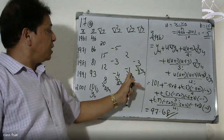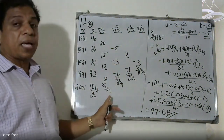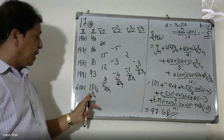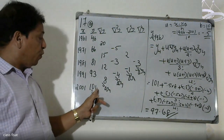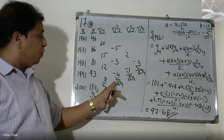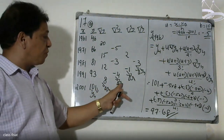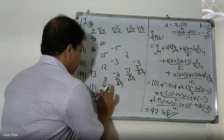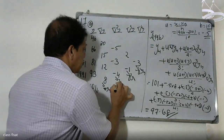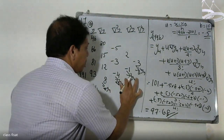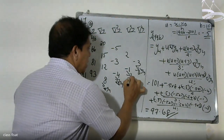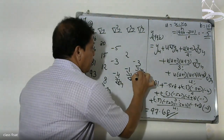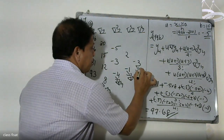We have to calculate the table with the values: y₄, Δy₄, Δ²y₄, Δ³y₄, and Δ⁴y₄ — the backward difference table up to the fourth-order differences.